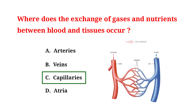The exchange of gases and nutrients between blood and tissues occurs in the capillaries. Capillaries are tiny blood vessels that connect arteries and veins and have very thin walls. These thin walls allow oxygen and nutrients to pass from the blood into the tissues, and waste products to pass from the tissues into the blood.